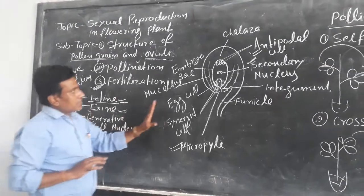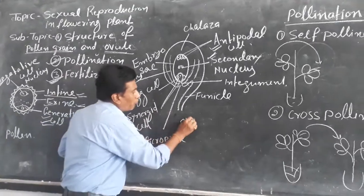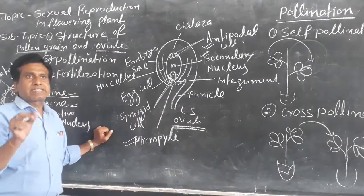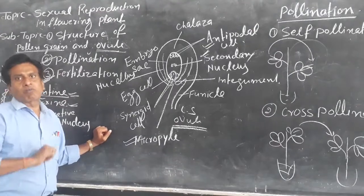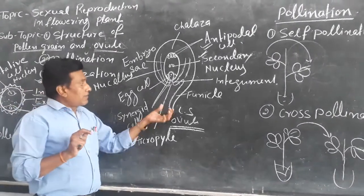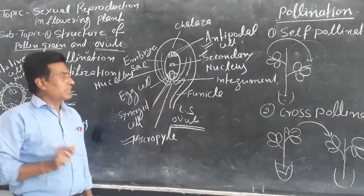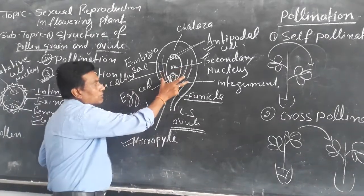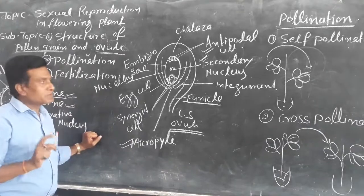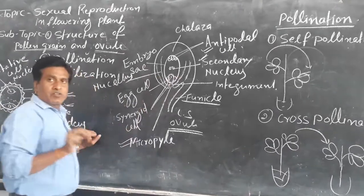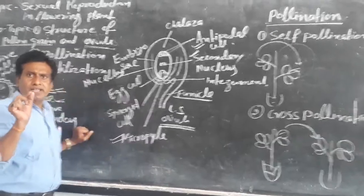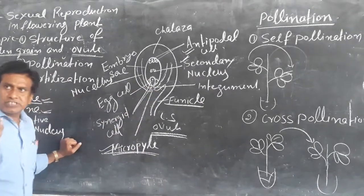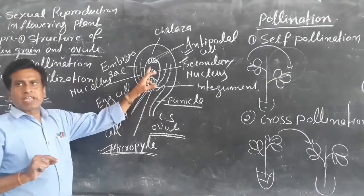Now, another structure is the ovule. I am talking about the general section of the ovule. Ovule is produced inside the ovary. It is attached to the inner wall of the ovary, and it is attached by a stalk-like structure called the funicle. When the mass of cells is present, this mass of cells is known as nucellus. Nucellus has a small opening, a small pore-like structure, called the micropyle. Through this micropyle, the pollen tube enters into the embryo sac.